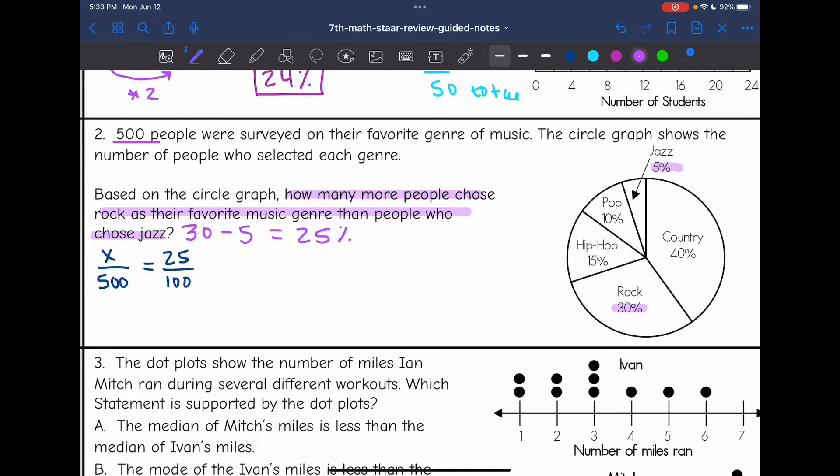And I see a relationship here. 100 times 5 would get me to 500. So then 25 times 5 would get me to x. So that means that x equals 125. So that means that 125 people more prefer rock than jazz.